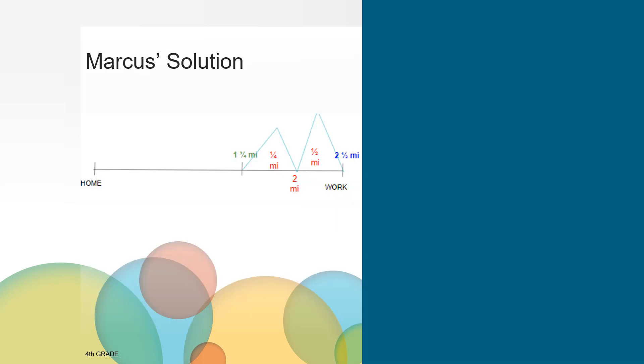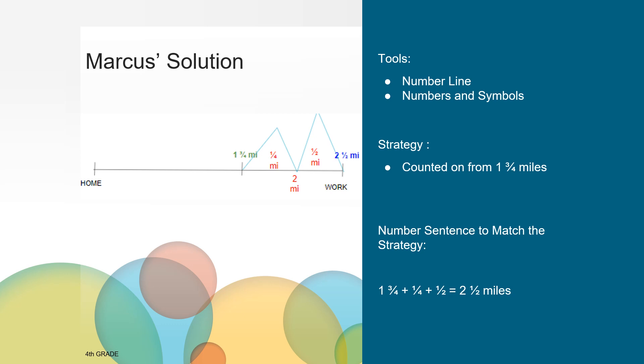Let's compare the tools and strategies that these two students used to solve the problem. Take a look at Marcus's solution. What tools did he use? He used a number line and numbers and symbols. How could you describe Marcus's strategy for solving this problem? He counted on from one and three fourths miles. So he used a counting up or counting on strategy. What are some number sentences that would match the way Marcus solved the problem? This is one number sentence that would match the work that Marcus did on the number line. And here's another number sentence that combines the one fourth and one half.